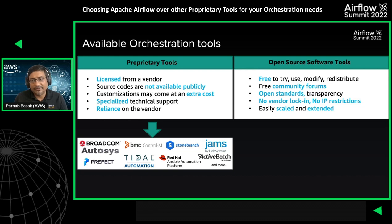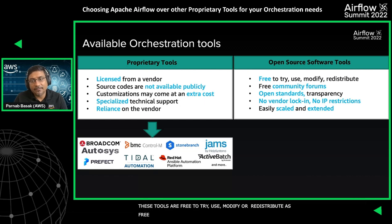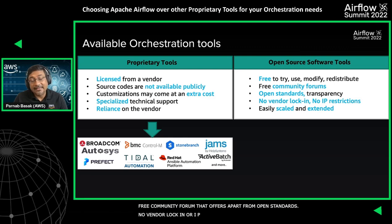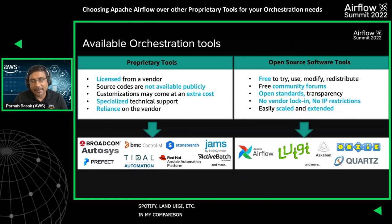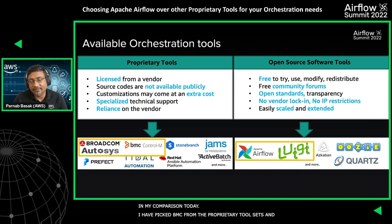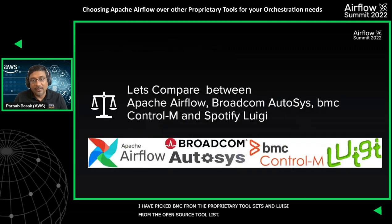There are a lot of proprietary products available in the market — prime ones among them being Autosys from Broadcom, Control-M from BMC, Stonebranch, JAMS by Helpsystems, Perfect Title, Ansible, and Active Batch. On the opposite side, you have open source software tools — these are free to try, use, modify, or redistribute. They have a free community forum for support, are based on open standards, have no vendor lock-in, and can be easily scaled and extended. Examples include Apache Airflow and Spotify's Luigi.